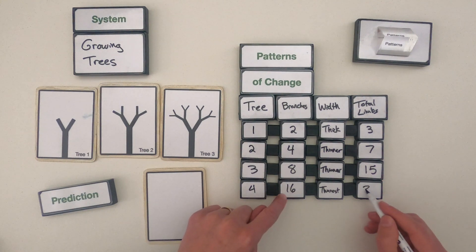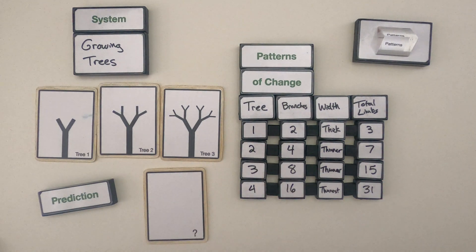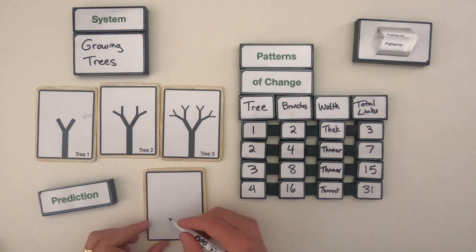So I'm going to say around 31 total limbs that we would have in this tree. So now that I've done that, I could sketch out what I think this tree looks like. Let me give that a try.